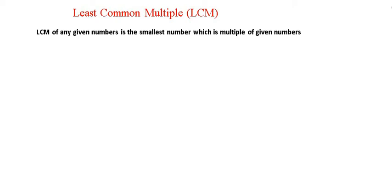Today we are going to talk about the least common multiple. The least common multiple of any given numbers is the smallest number which is a multiple of the given numbers. For example, we are given numbers 3 and 5. We need to find the multiples of 3 and 5. Let's understand the meaning of 'least', 'common', and 'multiple' by going right to left in that phrase.